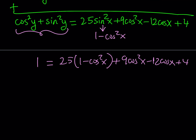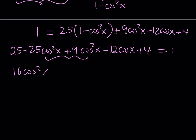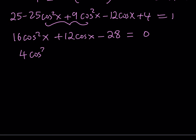Distributing, we get 25 minus 25 cosine squared x plus 9 cosine squared x minus 12 cosine x plus 4 equals 1. Combining like terms and moving everything to one side: negative 16 cosine squared x becomes 16 cosine squared x on the other side, negative 12 cosine x becomes positive, and 25 plus 4 minus 1 gives 28. Dividing everything by 4: 4 cosine squared x plus 3 cosine x minus 7 equals 0.